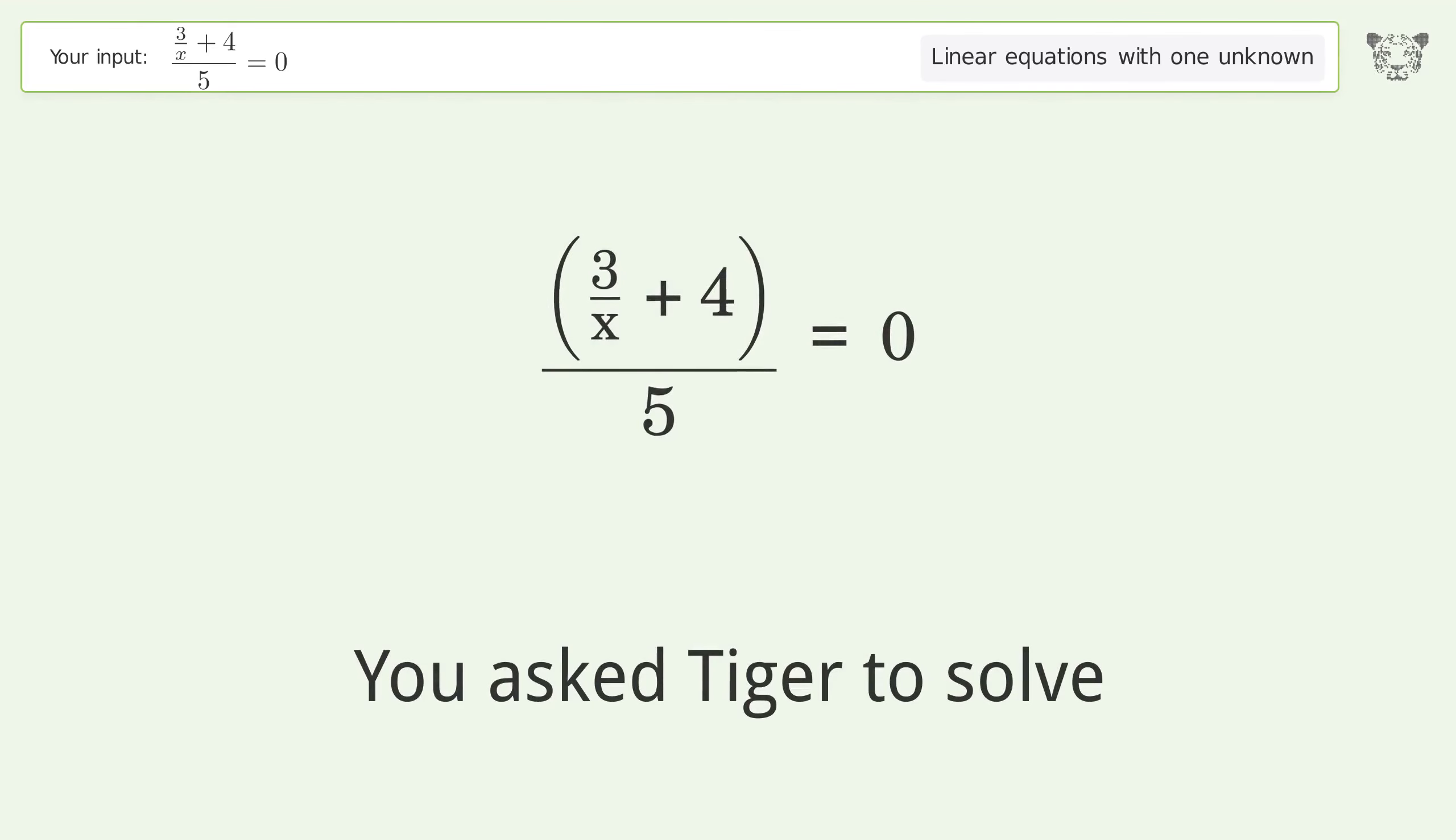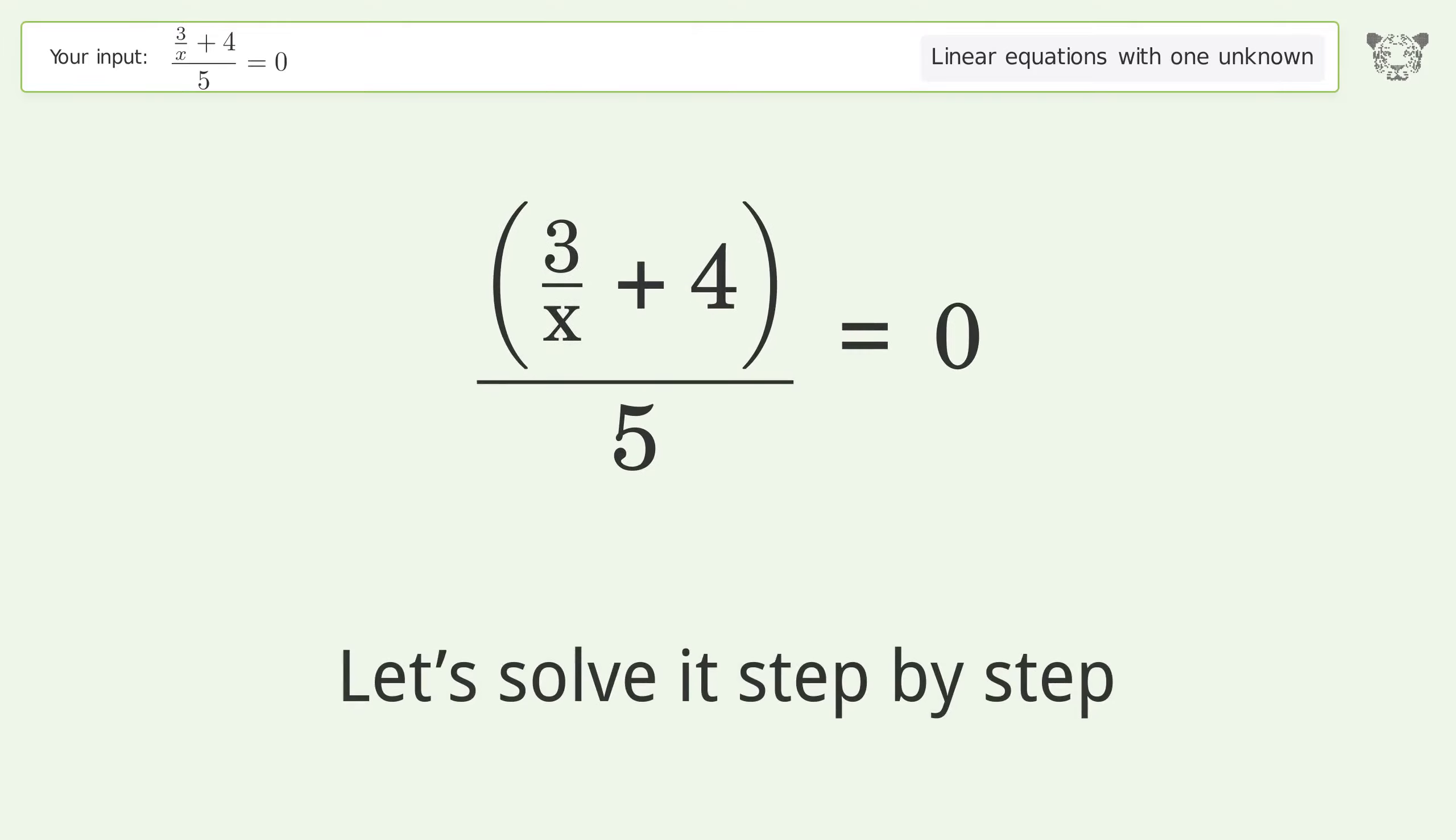You asked Tiger to solve this. It deals with linear equations with one unknown. The final result is x equals negative 3 over 4. Let's solve it step by step.